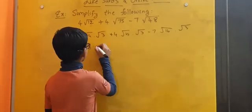Here all these are similar surds. So we can combine them. So we get here 8 + 20 is 28, and 28 - 28 is 0. So 0√3, here 0 × √3 is 0. So this is the answer.